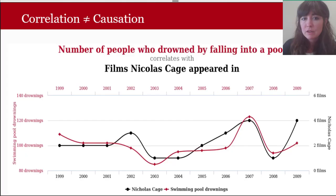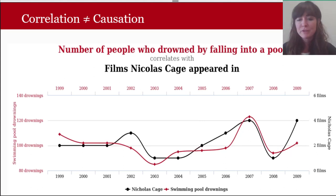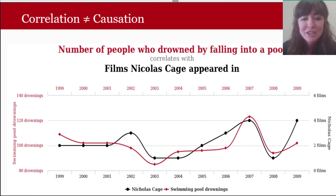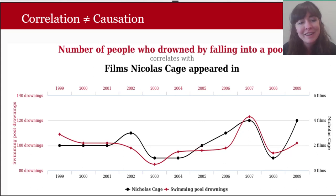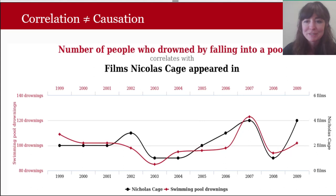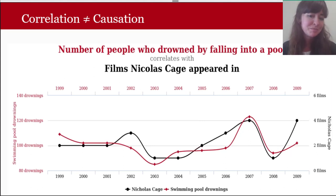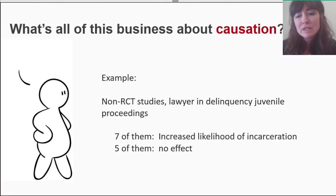The reason to think about the difference between associations and causal pathways: there's a humorous data example showing that over time, the number of films Nicolas Cage appeared in closely tracks the number of people who drowned by falling into a pool from 1999 to 2009. Intuitively we know there's no causal relationship between the two, but if you're just pulling data and looking at it together without thinking carefully, you might draw the wrong conclusion. Just seeing an association doesn't mean one thing caused the other.